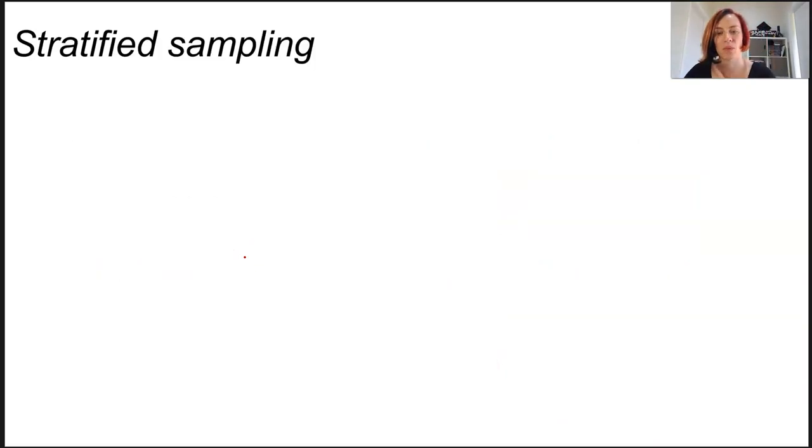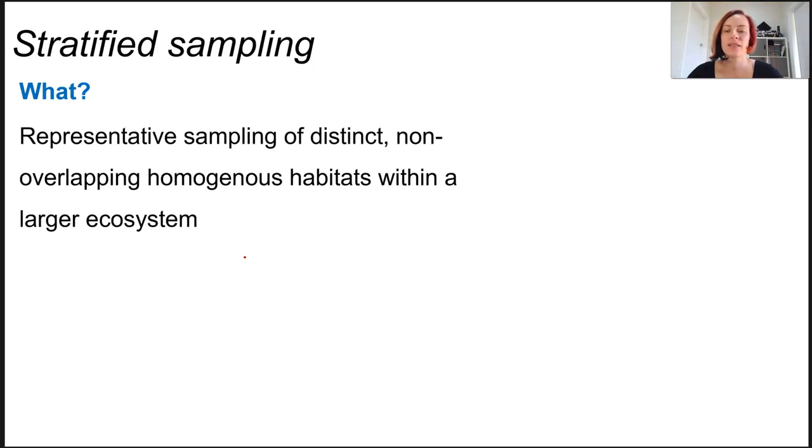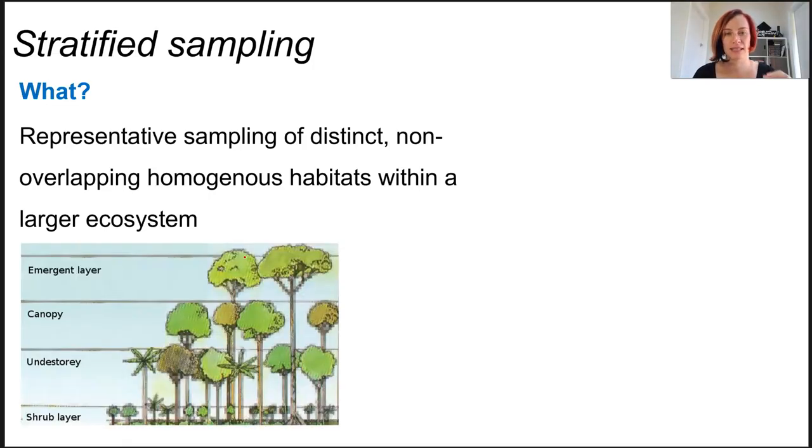Stratified sampling is a method where data is collected from an ecosystem in a way that includes samples from all subgroups within the larger ecosystem. Ecosystems are sampled this way when they have distinct, non-overlapping, homogenous habitats within them. So really clear distinction between them.